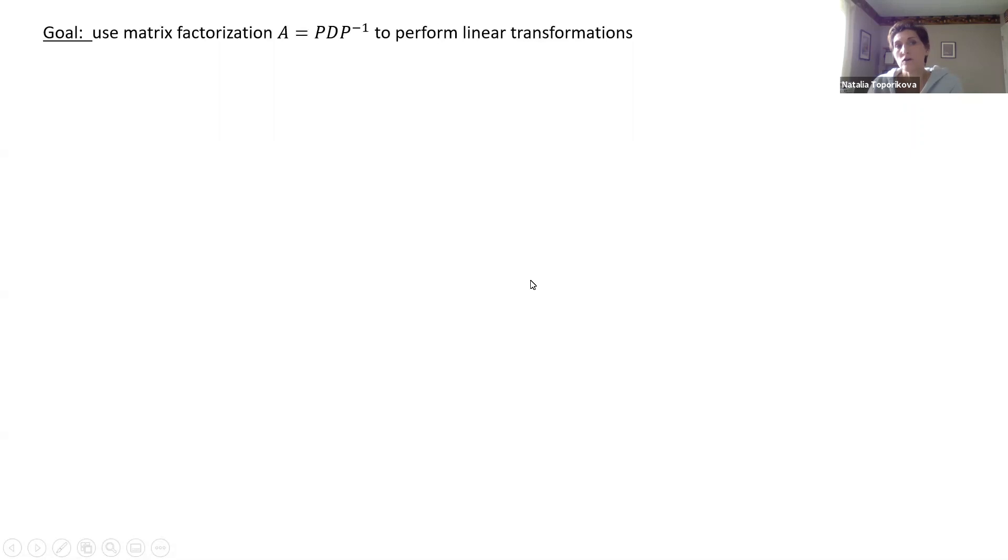So why do we talk about linear transformations? The main goal here is to actually use the matrix factorization which we discovered in the previous chapter, and we will use this factorization to perform linear transformations. And probably you don't see the connection between the factorization and transformations right away, so I give you a little example to make it more tangible.